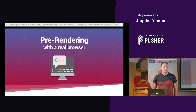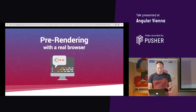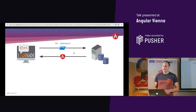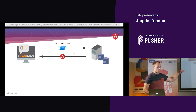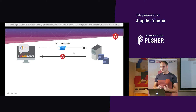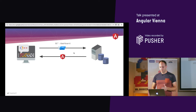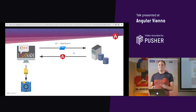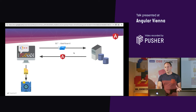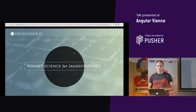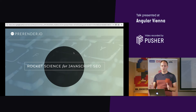Let's talk about pre-rendering with a real browser. The idea is very simple: we take a real browser — Chrome, Firefox, Edge, Opera, Samsung browser, whatever — open our page, send an HTTP request, get back the application bundles, fetch the HTML from the generated DOM tree, and save it to the file system. There's a paid service called prerender.io which does exactly this — you can use it for free within a limited range.